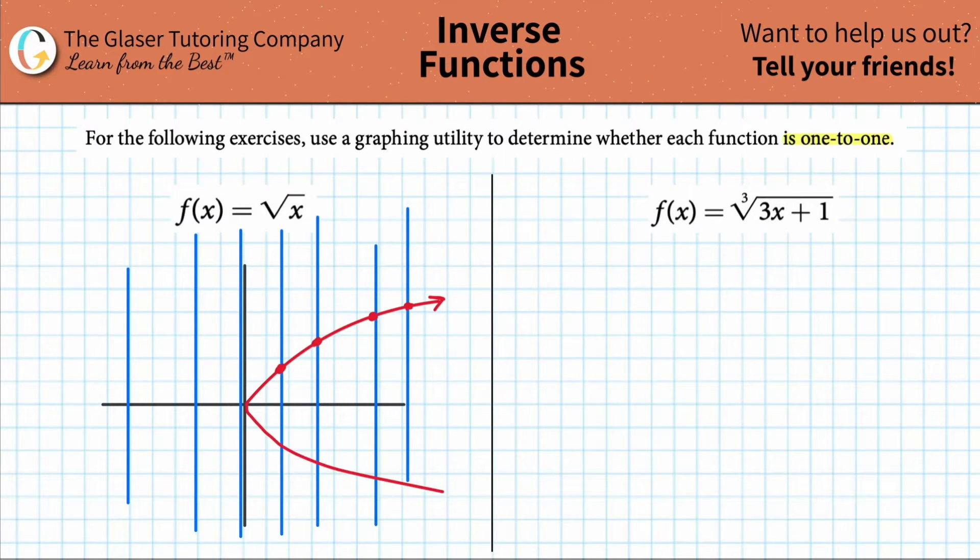But if the graph looked like this now, or the function looked like this with both parts there, you see how now these vertical lines are intersecting the graph in more than one spot here and here. What that's now telling me is that this x value, let's just pretend it's x equals two, has now two y values. That's not one-to-one. Because now it's one x for two y's, not one-to-one.